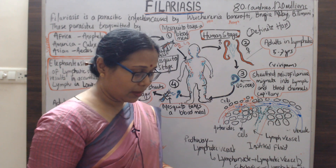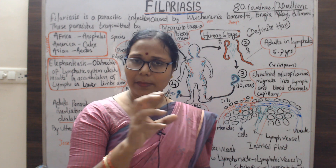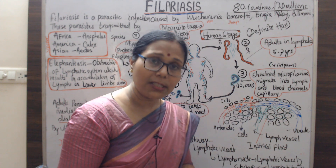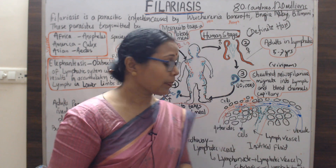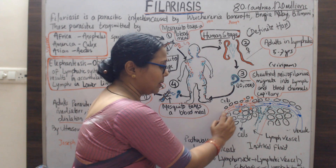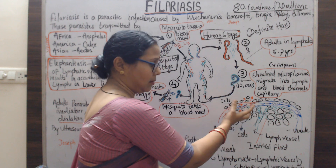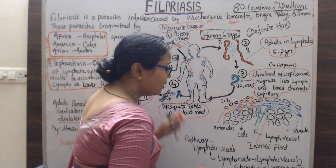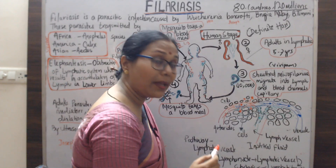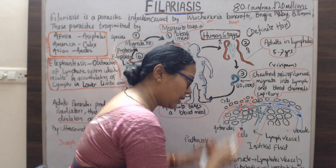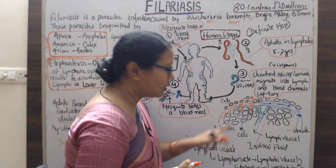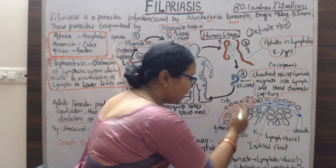Now let's look at the lymphatic system. Lymph is the fluid present in the lymphatic system. When blood circulation occurs, arteries carry oxygen and nutrients to different cells of the body. From the arterioles — the smallest arterial branches — blood carrying oxygen and nutrients reaches the cells. Due to high hydrostatic pressure in the arteries, some fluid escapes into the space between cells.